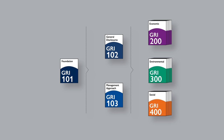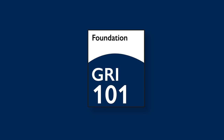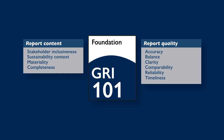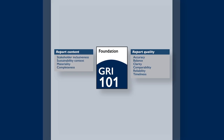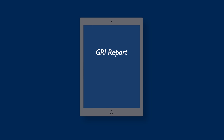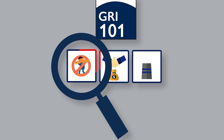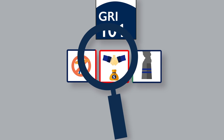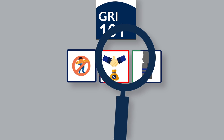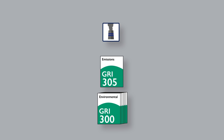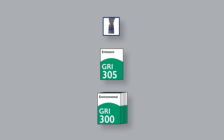The starting point for using the standards is GRI 101 Foundation. It explains how you use and reference the set of standards, introduces the 10 reporting principles, and explains how to prepare a report that's in accordance with the standards. By applying the materiality principle from this standard, you identify your material topics — those with the most significant impacts and influence on stakeholders. This focus on materiality helps you report on the impacts that matter most. Based on your material topics, you select the topic-specific standards that are relevant for you.